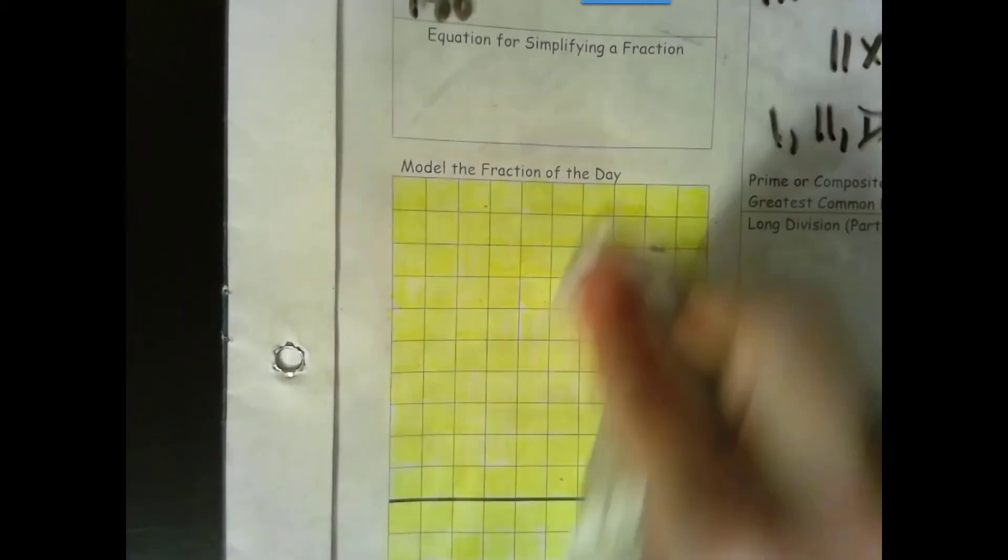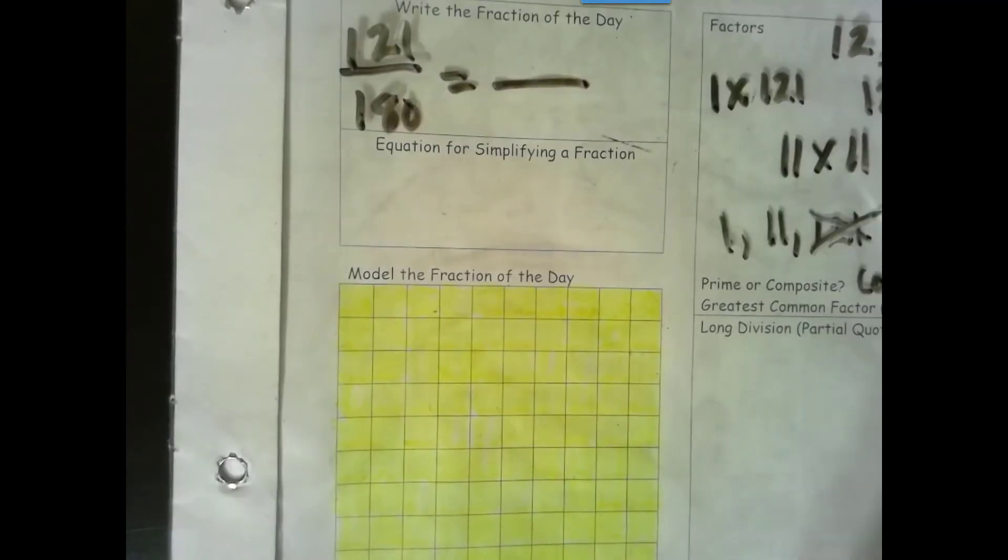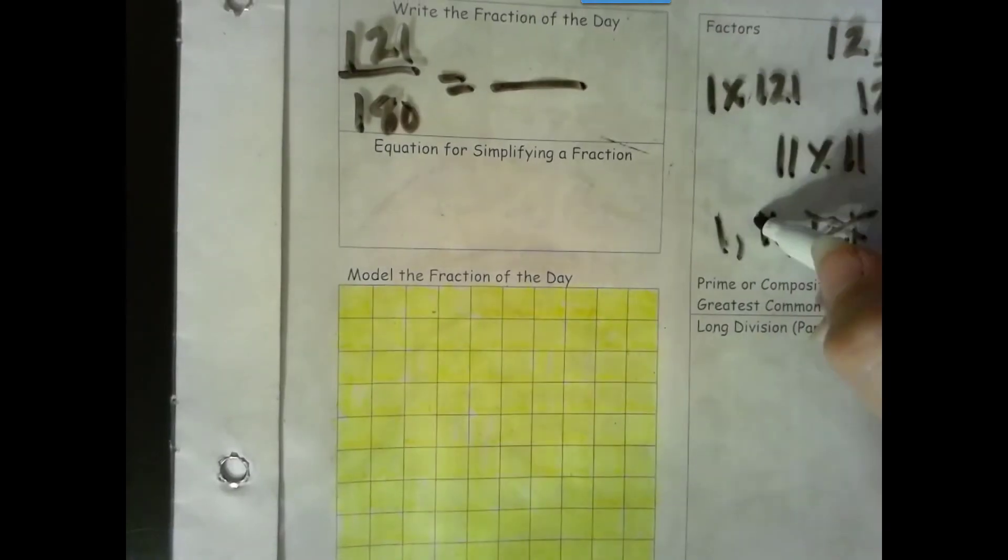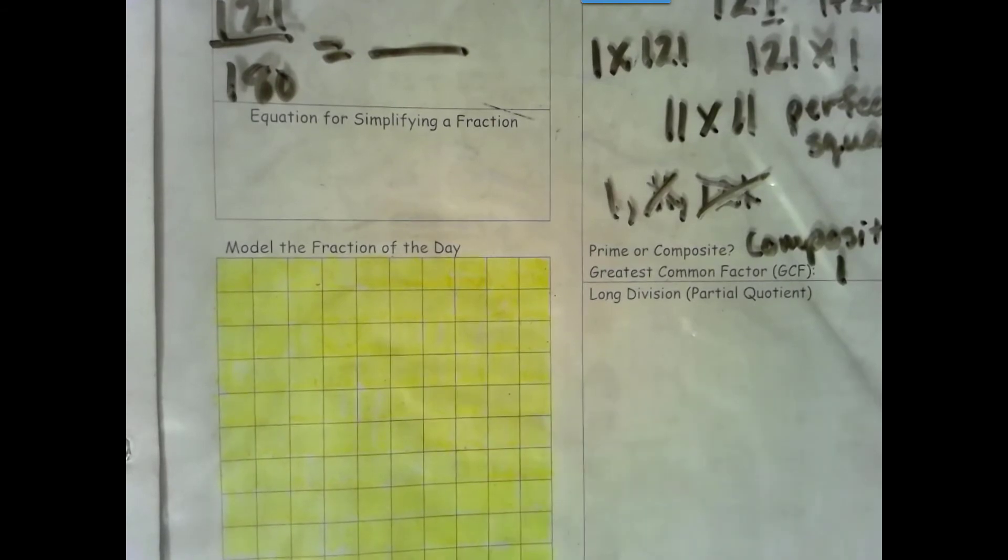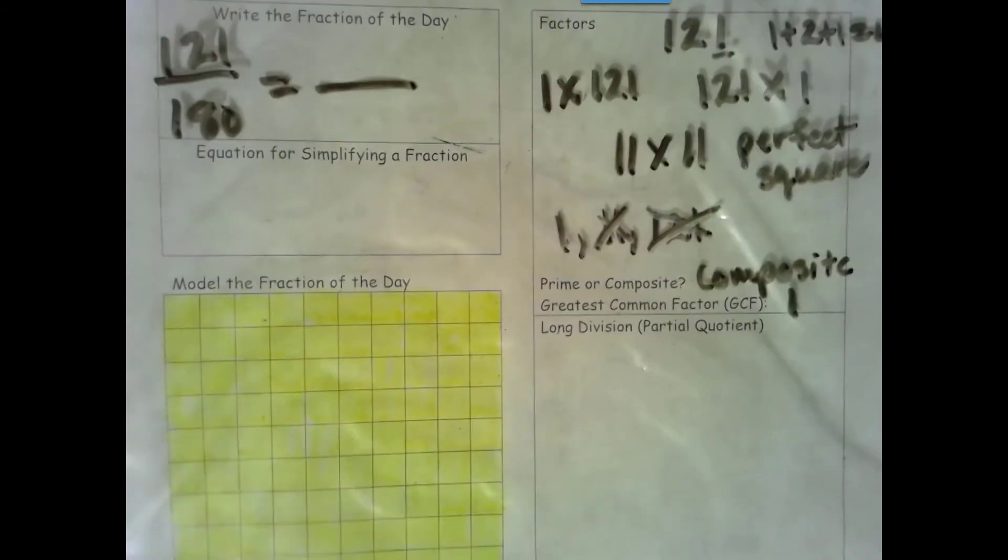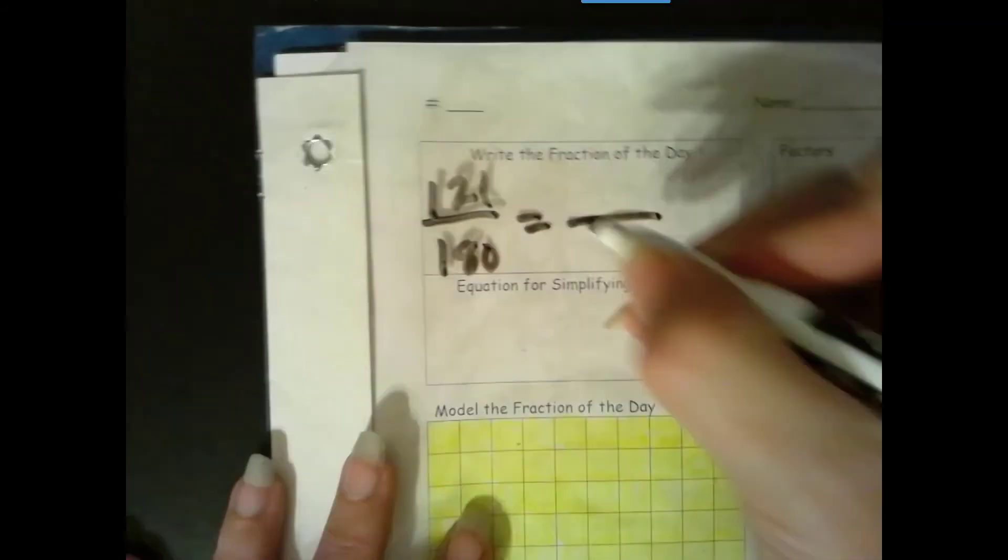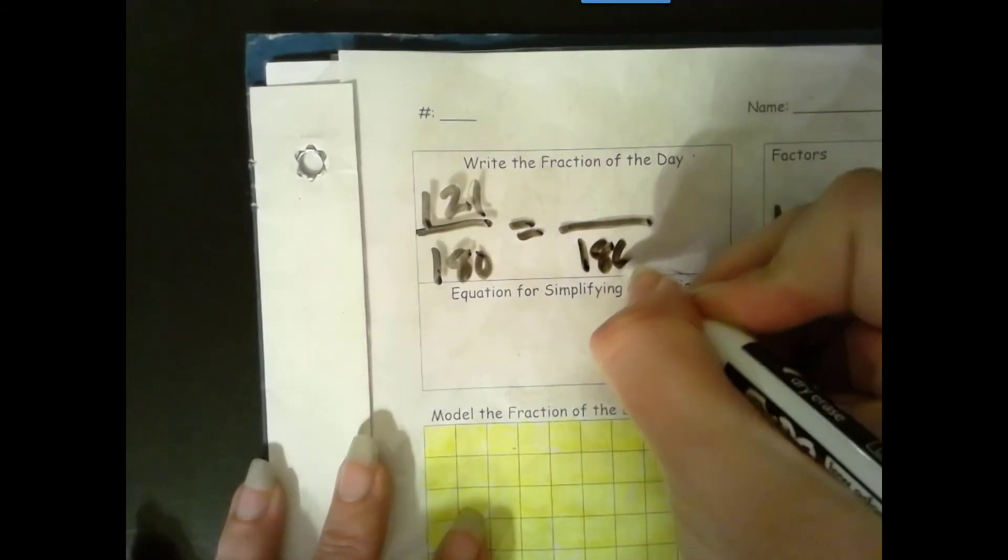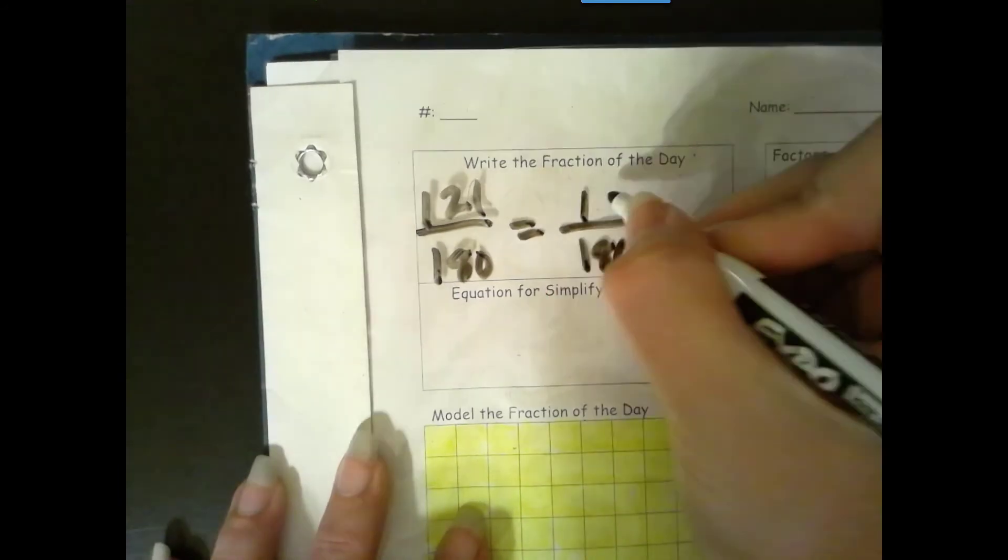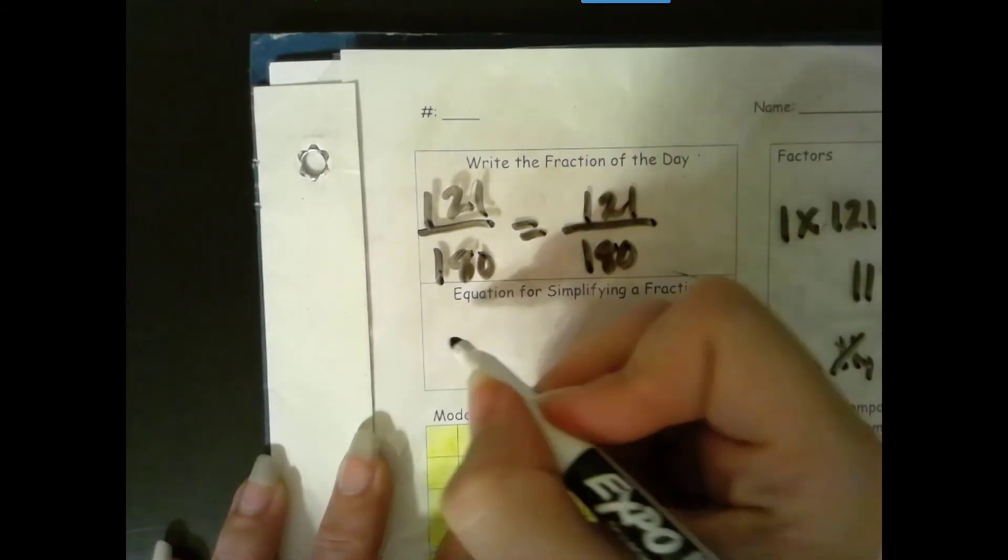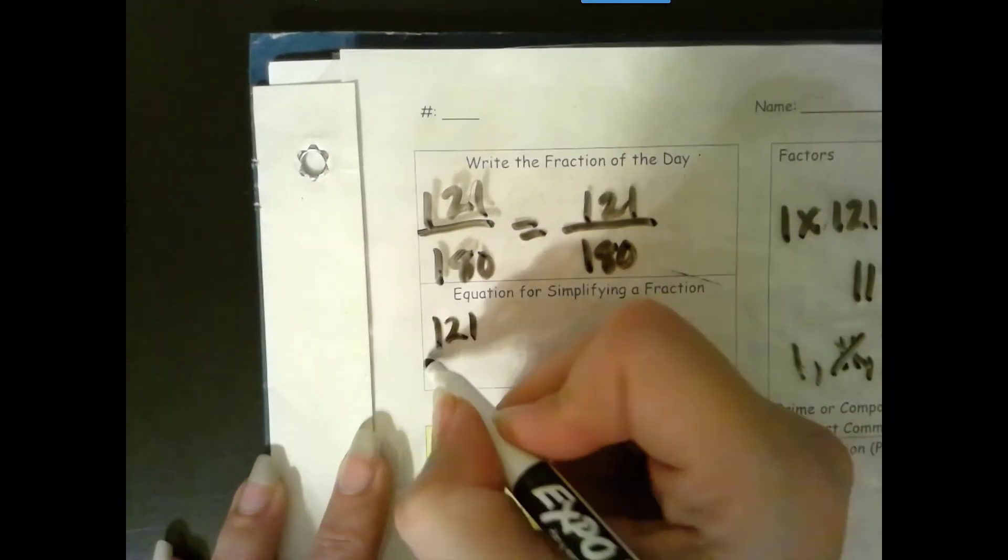So 11 is not our greatest common factor. That means we are left with 1. 1 is our greatest common factor. So let's go ahead and make groups of 1. Done. How many total groups of 1 do we have? We have 180. How many are shaded in? 121.